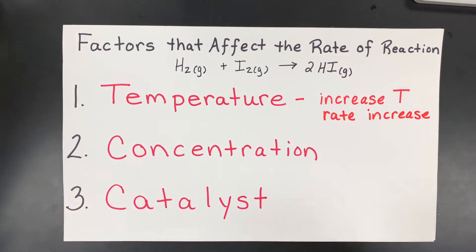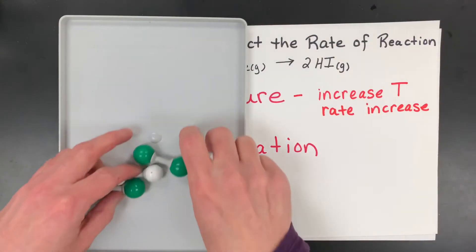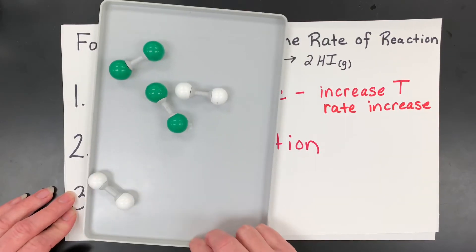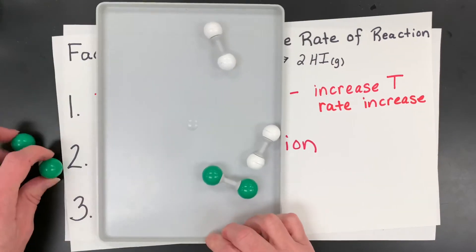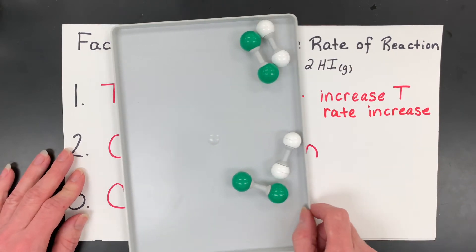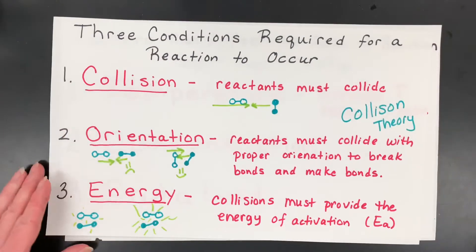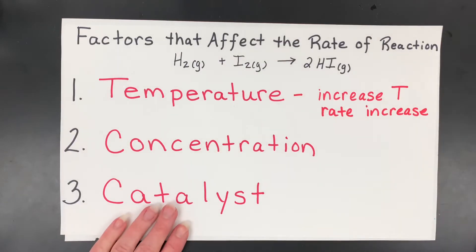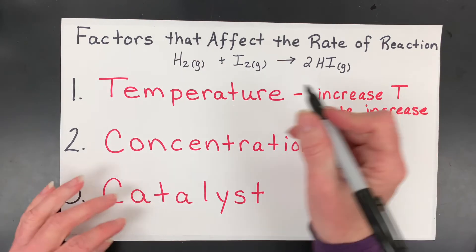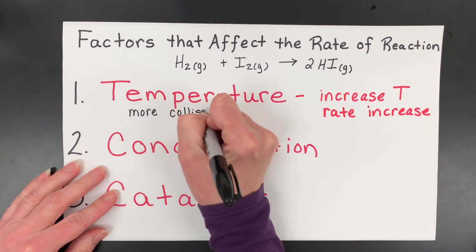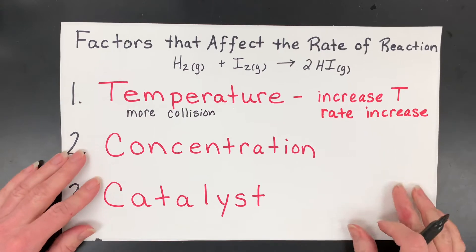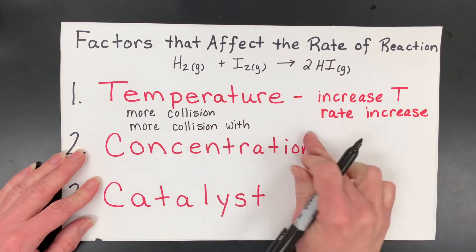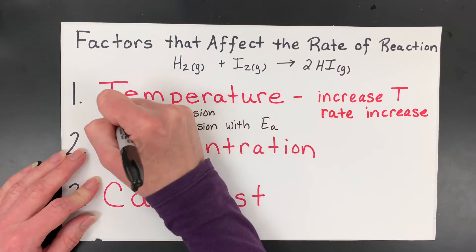Let me get those particles back out. Here are my reactant particles — I'll just keep four of them. Think about what temperature is: it's the average kinetic energy of the particles. These are gaseous particles, and if I increase the temperature, they should have a higher average kinetic energy. Going back to the three conditions for a reaction, increasing temperature causes more collisions, and also more collisions with the necessary activation energy to break the bonds and create products.